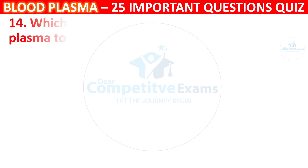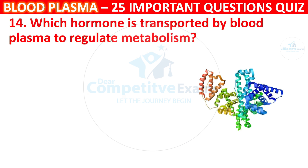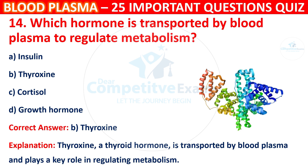Question 14: Which hormone is transported by Blood Plasma to regulate metabolism? Your options are Insulin, Thyroxine, Cortisol, or Growth Hormone. The correct answer is B, i.e. Thyroxine. Thyroxine, a thyroid hormone, is transported by Blood Plasma and plays a key role in regulating metabolism.